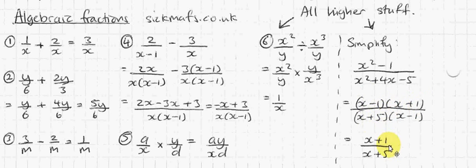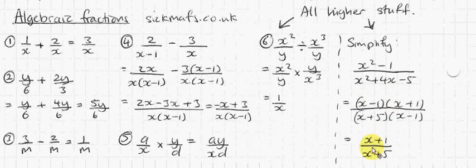You don't need the brackets anymore because it's not timesing by anything. Before, you needed the brackets to say all of this times that, but there's only all of that left. So you just write x plus 1 over x plus 5, and that's it.